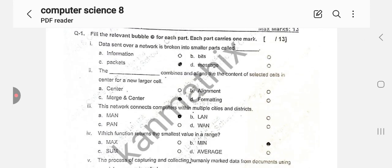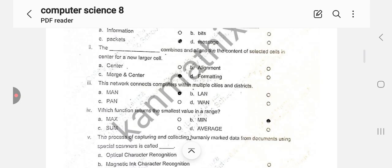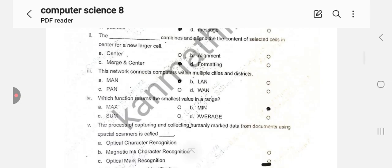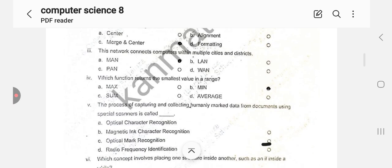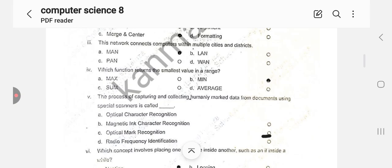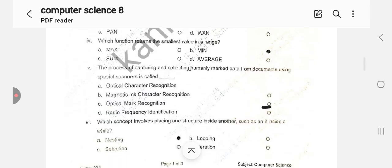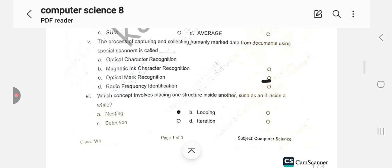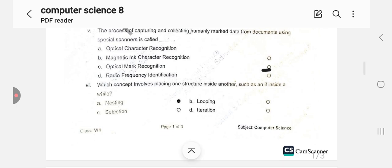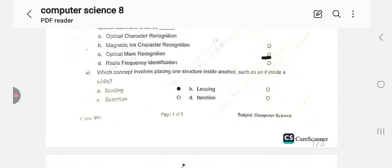MCQ 1: Data sent over network is broken into smaller parts called packets, option C is correct. The dash combines and aligns the content of the selected cell in the center for a new larger cell, option C is correct. This network connects computers within multiple cities and districts, option A is correct. Which function returns the smallest value in the range, option B is correct. The process of capturing and collecting commonly marked data from documents using special scanner is called optical mark recognition, that's option C.